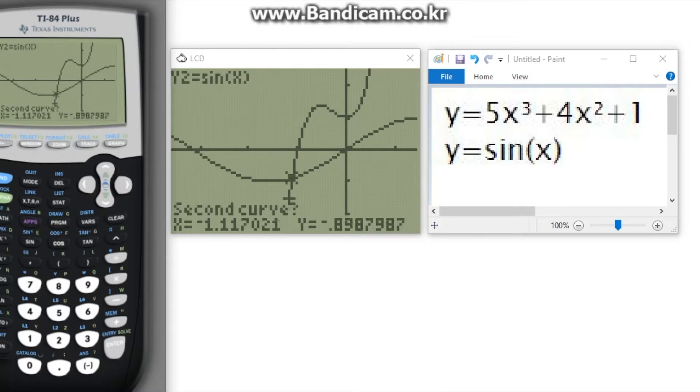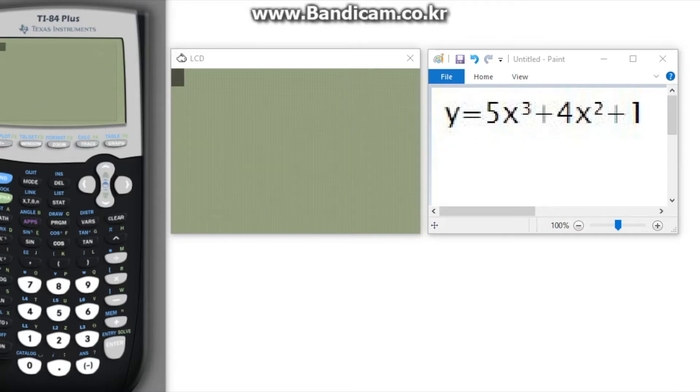Once you do this, you should get the answer for the intersection as x equals negative 1.10846 and y is equal to negative 0.89501. Moving on, we will be now finding zeros using a calculator.